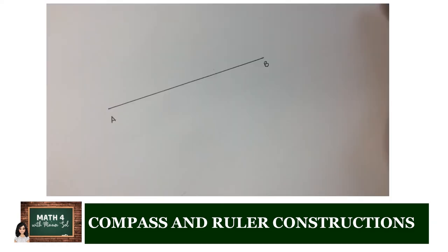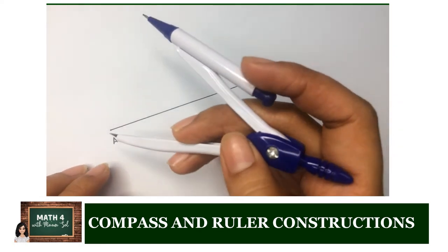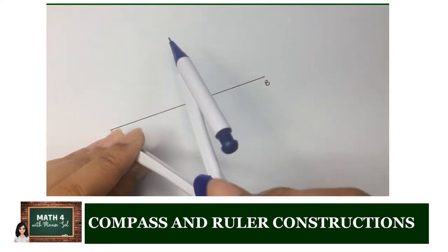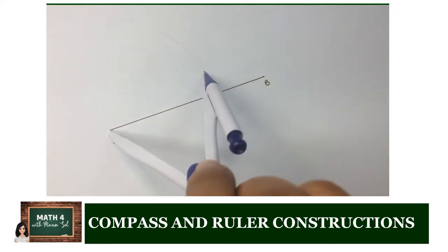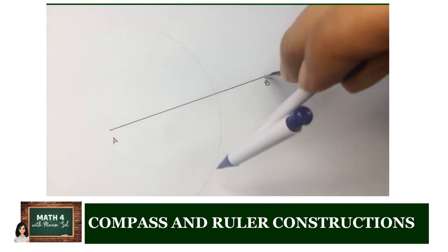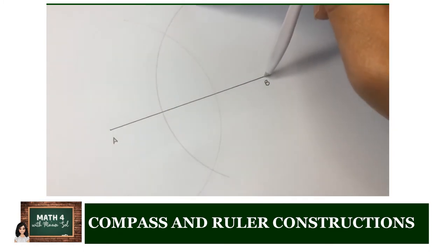So let us get started and construct the perpendicular bisector of the given segment AB. We take our compass and set it to a radius which is more than half of the segment. We use that to create an arc from both A and B as centers.